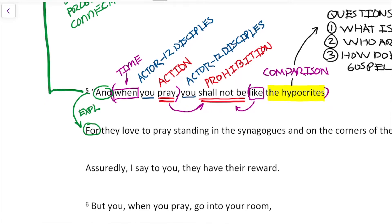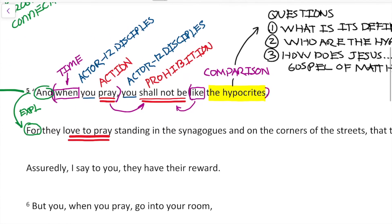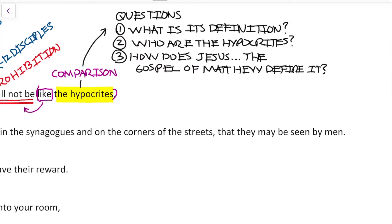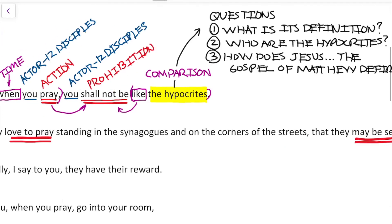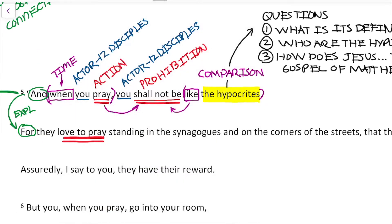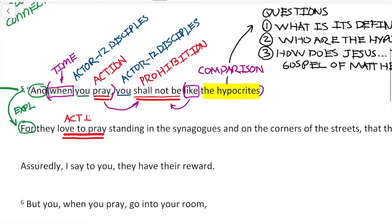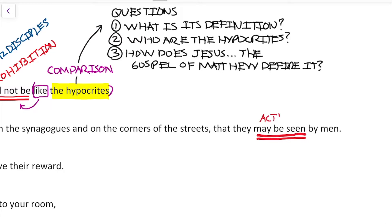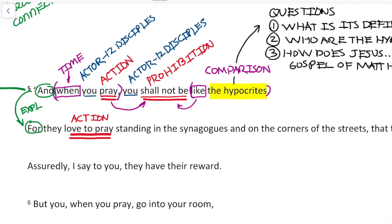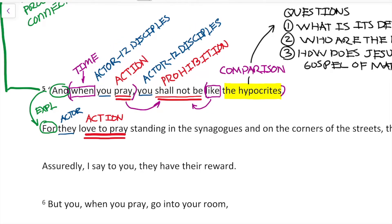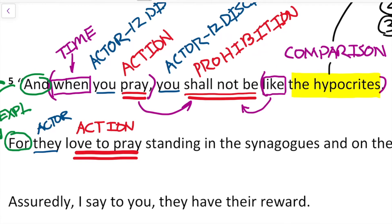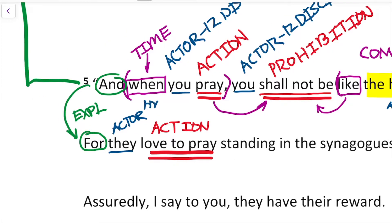Now let's go ahead and identify verbs. We have 'love to pray' — that's an action — and also 'may be seen,' which is also an action. Who is the actor? The pronoun 'they' — the antecedent is 'hypocrite.' So we know that hypocrite is being defined for us by Jesus and ultimately by Matthew.